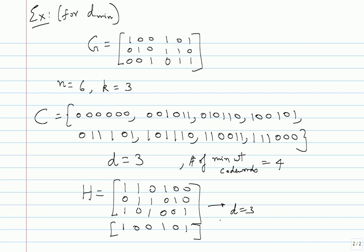For a large general code, finding minimum distance has been proven to be an NP-hard problem, meaning there are no known efficient algorithms. So given a generator matrix or parity check matrix, you should be able to list all codewords, figure out N, K, and D, or find D from the parity check matrix — but be aware it is computationally hard in general.